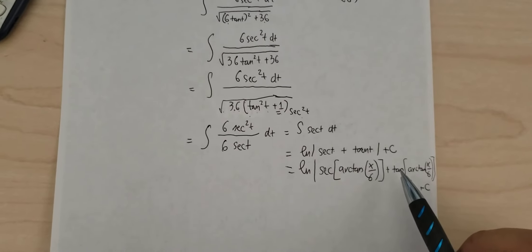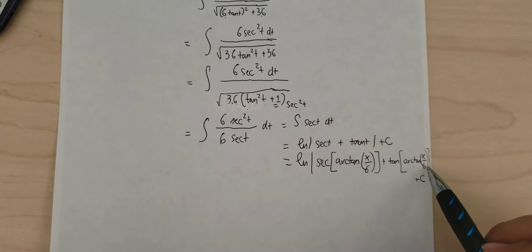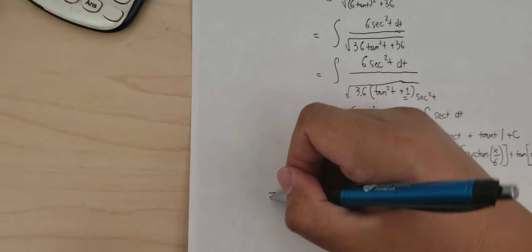We know that tan equals s over 6. And we got the final answer here.